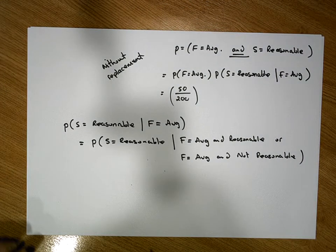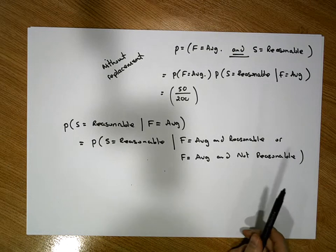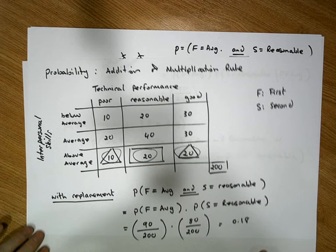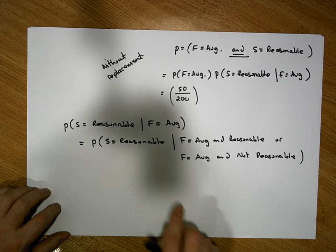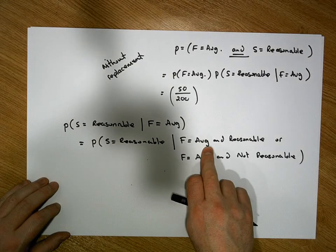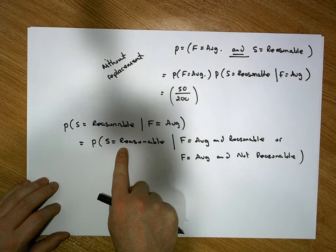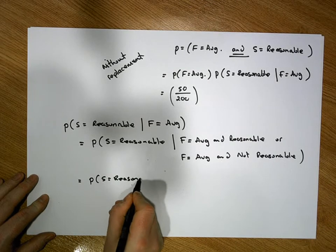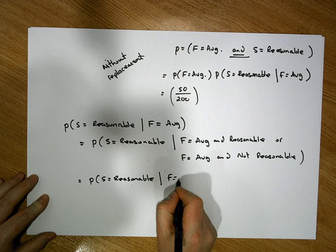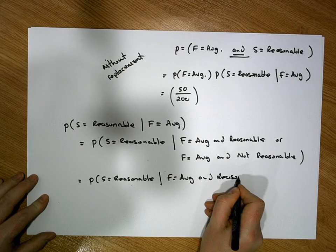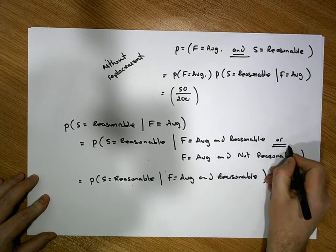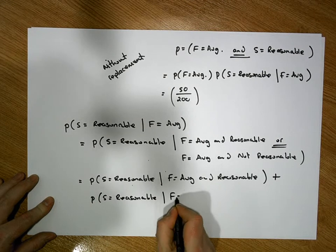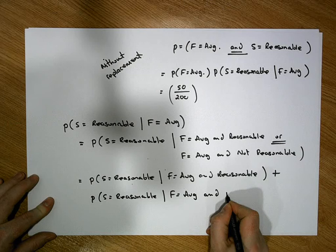So we need to consider an 'or' here. Being average-and-reasonable versus average-and-not-reasonable are two mutually exclusive events — you're either in one group or the other — so we simply sum the individual probabilities. The conditional probability becomes: P(second is reasonable | first was average and reasonable) plus P(second is reasonable | first was average and not reasonable).